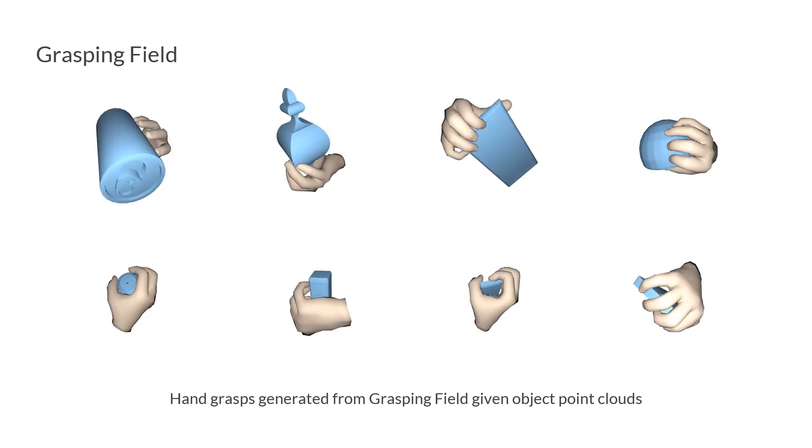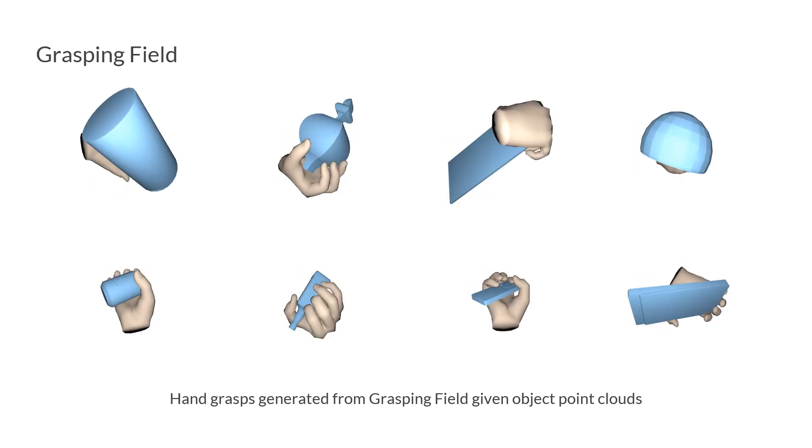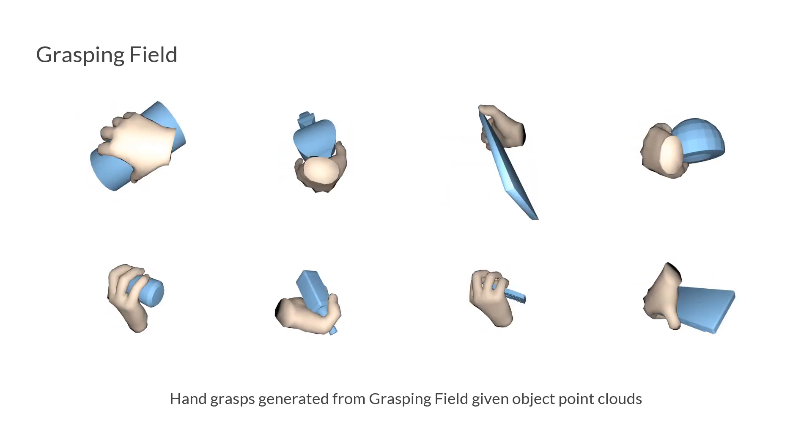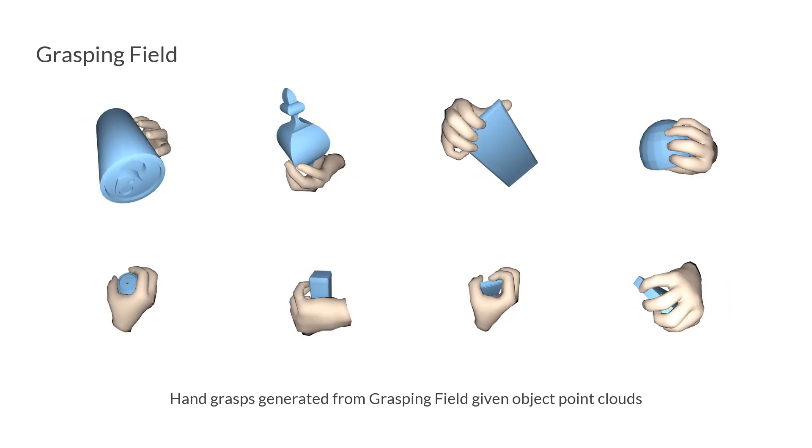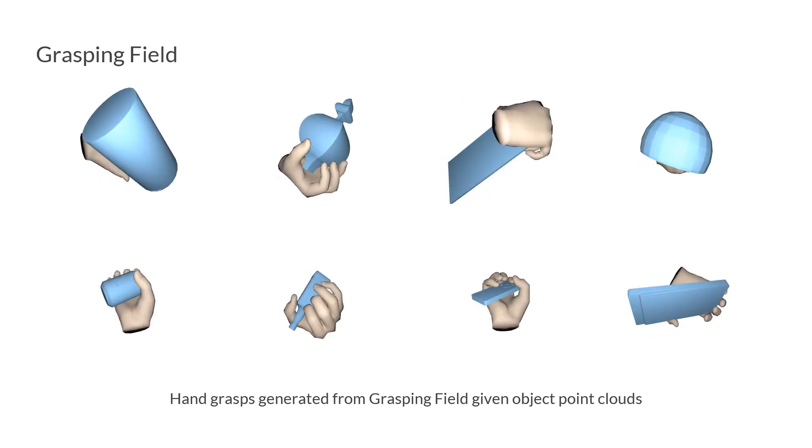Given hand and object shapes, our goal is to learn a representation that is best suited for modeling hand-object interaction. Here, we show grasps sampled using our proposed grasping field representation given 3D object shapes.